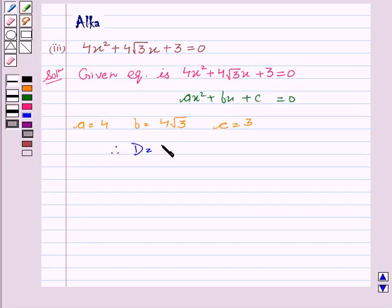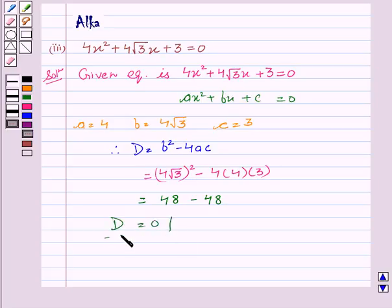Therefore D = b² - 4ac. This gives us D = (4√3)² - 4(4)(3) which is equal to 48 - 48. This implies D = 0.